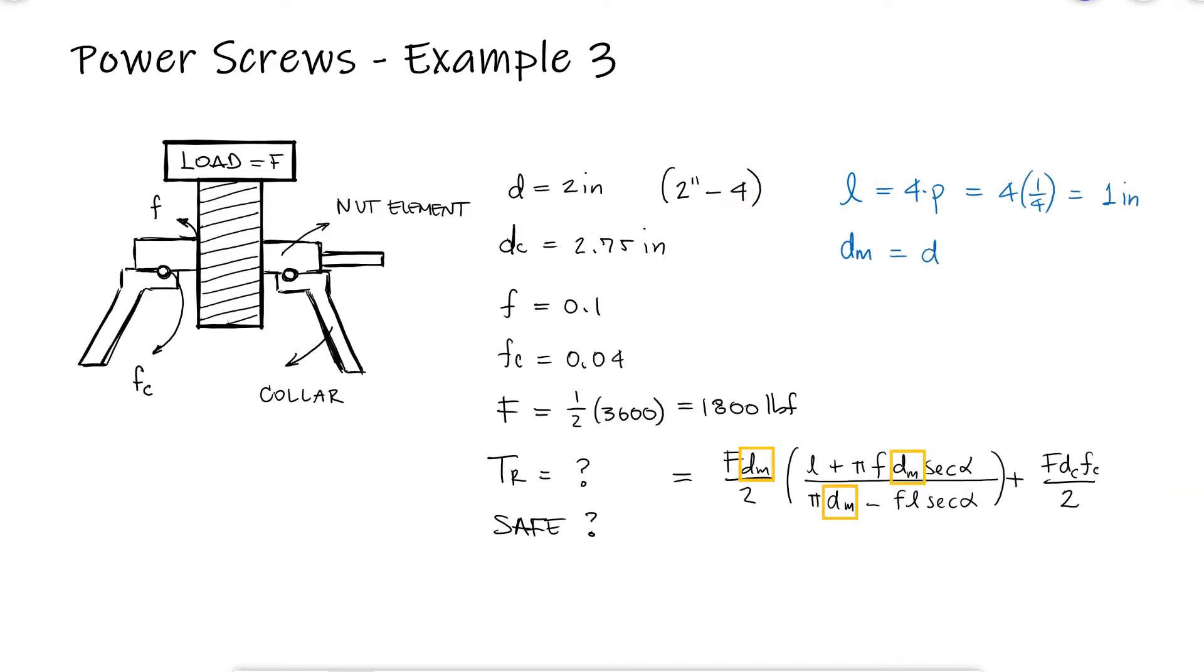We also need the mean diameter, which can be found using the same reasoning from examples one and two. The angle alpha is that for an acme profile, and the load, friction coefficients, and collar diameter are given.